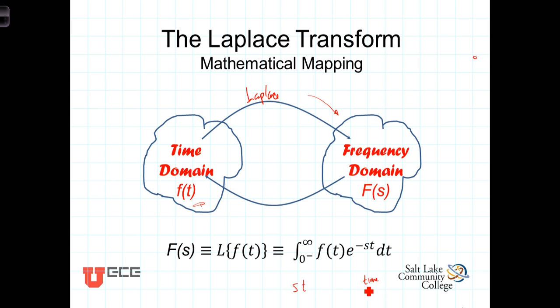s must have the units of reciprocal time, or 1 over time, so that the two time dimensions cancel, leaving us a dimensionless quantity here in the exponent.